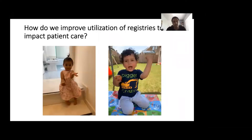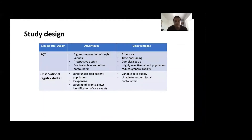Moving on to my second part: how do we improve the utilisation of registries to actually impact patient care? When we typically think about study design in surgery, we talk about randomized control trials. They are very rigorous for a single variable, they eradicate bias and confounders. However, they are expensive, time-consuming, and usually involve a very highly selective patient and surgeon population, which reduces the generalizability of the findings.